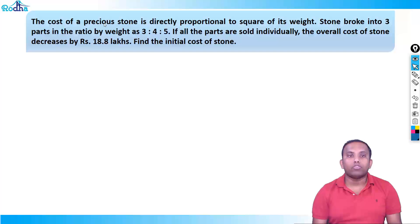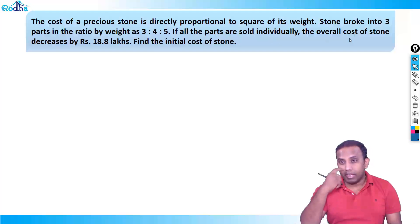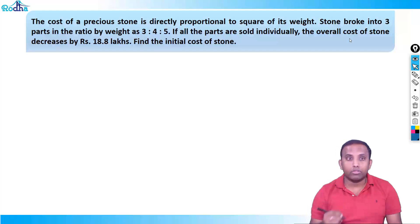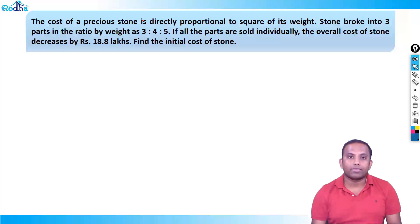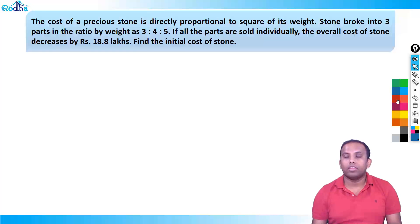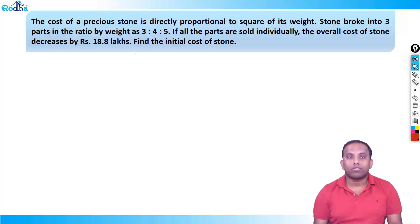The cost of a precious stone is directly proportional to the square of its weight. A stone broke into three parts in the ratio by weight of 3:4:5. If all the parts are sold individually, the overall cost of the stone decreases by rupees 18.8 lakhs. Find the initial cost of the stone.